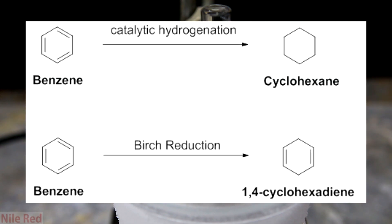One of the most classic ways to carry out a reduction is by catalytic hydrogenation but this generally reduces the molecule all the way down to the alkane and removes all of the double bonds.